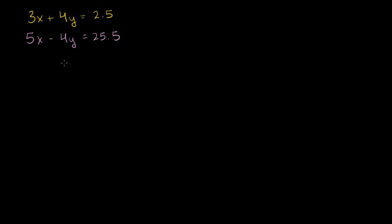With substitution, we like to eliminate one of the variables — we did that last time. But is there anything we can add or subtract to both sides of this top equation? Remember, any time you deal with an equation, you have to add or subtract the same thing to both sides. Is there something we could do that might eliminate one of the variables, leaving one equation in one variable that we can solve?